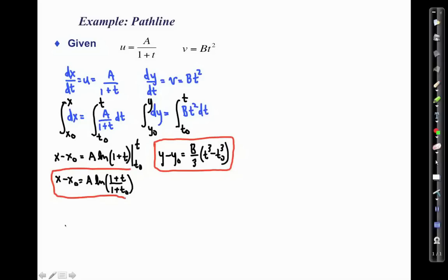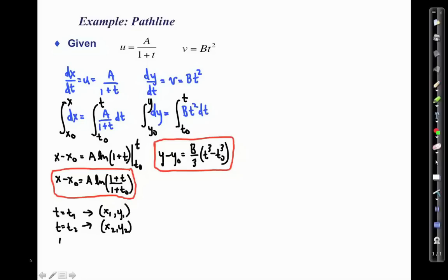To plot a pathline, one approach is to evaluate these equations at discrete times. At t = t1, calculate x1 and y1 to get the ordered pair (x1, y1); repeat at t2 to get (x2, y2), and so on. In a tedious but straightforward way, you build up a series of (x, y) points at different times that trace out the pathline curve.